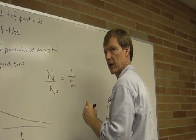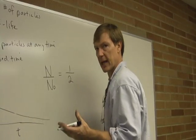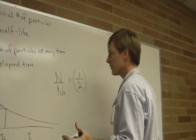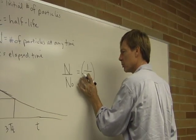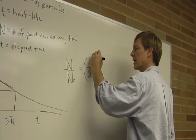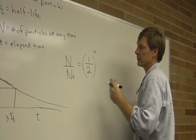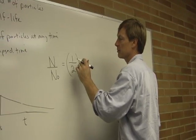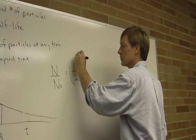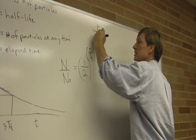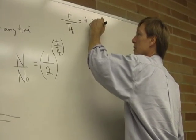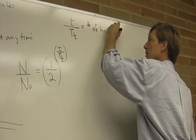Well, after the first half-life, it's 1 half. After the second half-life, it's 1 fourth, 1 eighth. So I keep multiplying this by 1 half. This is a fraction. The time divided by the half-lives is the number of half-lives.